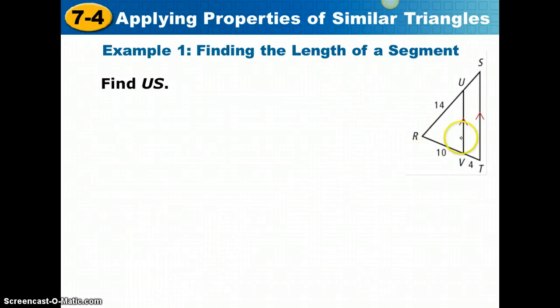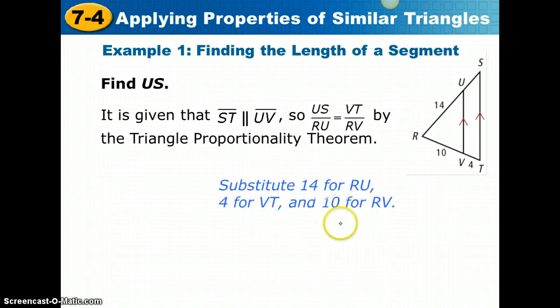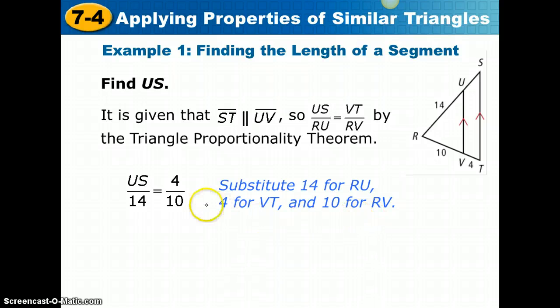So let's take a look at example 1. We are to find the length of US. We have triangle RST, and side RS and RT are intersected by segment UV, and it's parallel to ST. Since that is given to us, we can come up with this proportion. We could say US over RU is the same as VT over RV, so we're going to substitute 14 for RU, 4 for VT, and 10 for RV, and get this proportion.